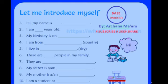Next is 'They are...' — here you have to say about the people in your family, so you will say 'They are very good persons.' Next: 'My father is a/an...' — if your father is an engineer, remember we use 'an' before vowels A, E, I, O, U, and 'a' otherwise. So 'My father is an engineer' or 'My father is a teacher' — whichever applies.